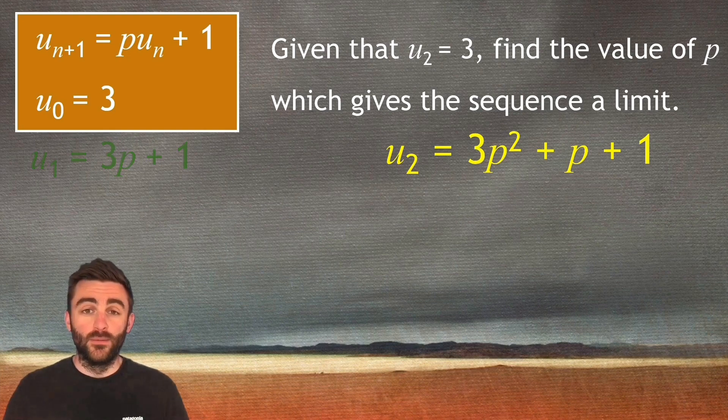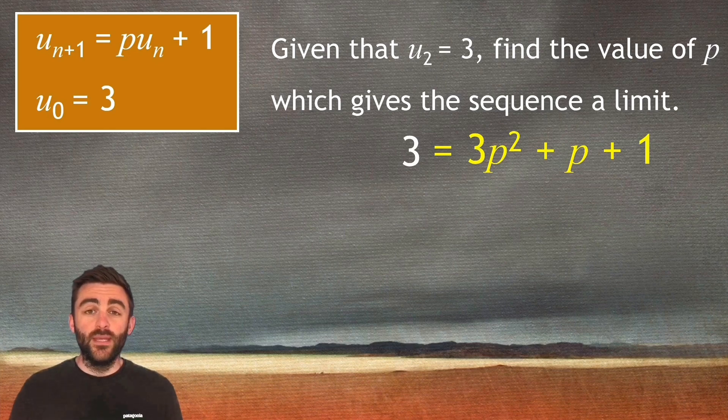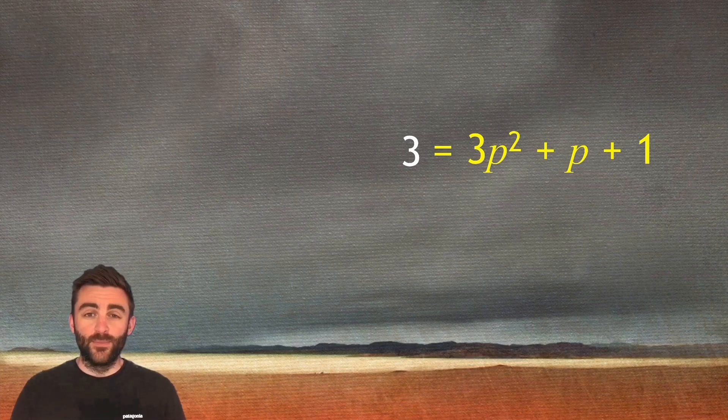Well we can get rid of the u_1 we don't need that bit. We're only interested in u_2. And it tells us that u_2 is equal to three. So if we bring that three down we can replace the u_2. So three equals three p squared add p add one. Let's forget everything else at this point. We just have a quadratic equation to solve.